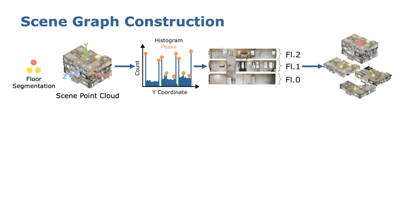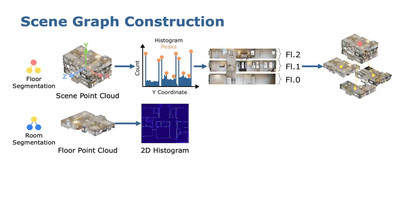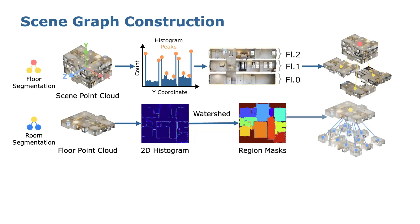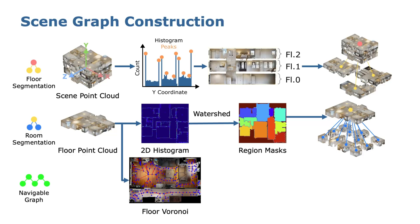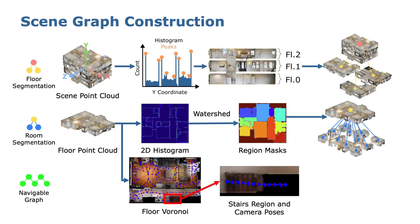To derive the room nodes, we generate a 2D histogram for the floor point cloud and apply watershed algorithm after some post-processing, which generates region masks. To generate a cross-floor navigational graph, we compute the Voronoi graph for each floor's free space and connect them with camera poses lying on the stairs.